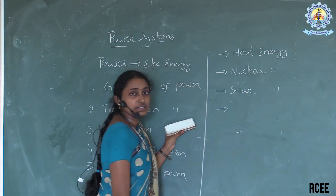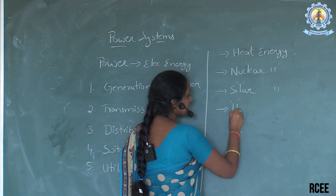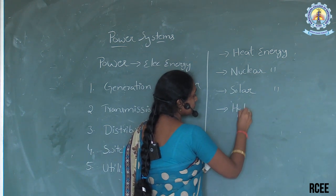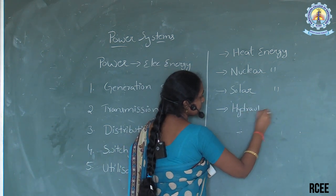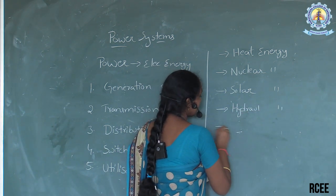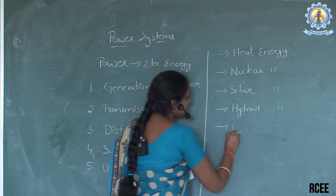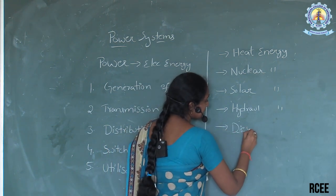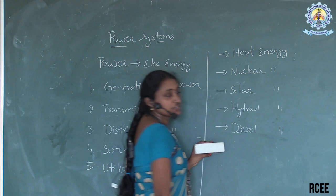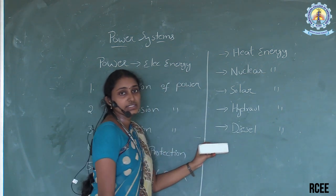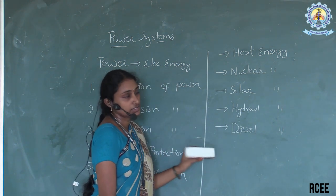There are different types of sources. Hydro energy is also converted into electrical energy. From diesel also — diesel has fuel and it is converted into electrical energy.